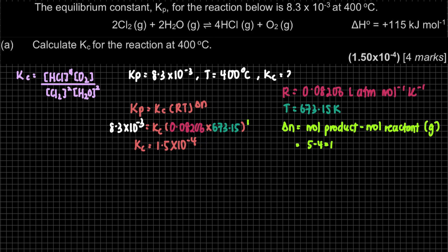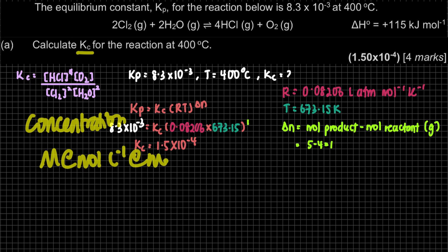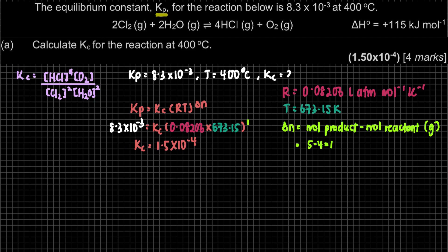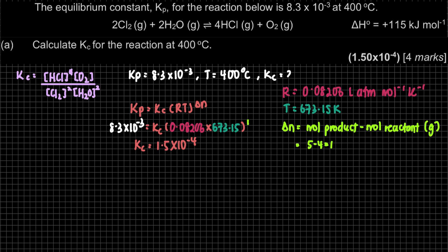How do we know when to use this formula? The question asks for Kc — C stands for concentration, with units of molar (mol/L or mol/dm³). Since the question does not give concentration information but does give Kp, we use the formula Kp = Kc(RT)^ΔN. Make sure R is from your list of constants, and ΔN accounts only for the gas phase — product minus reactant, gases only.